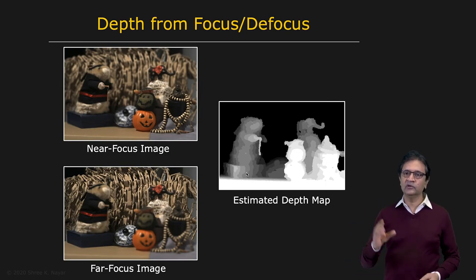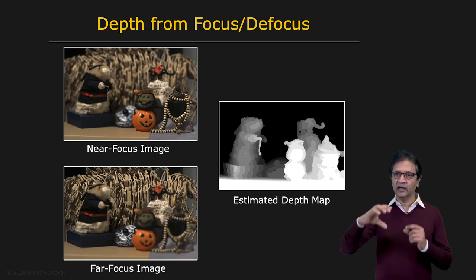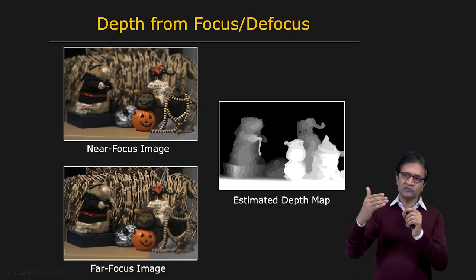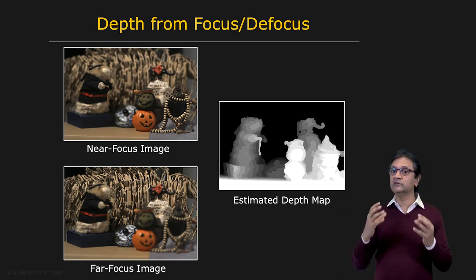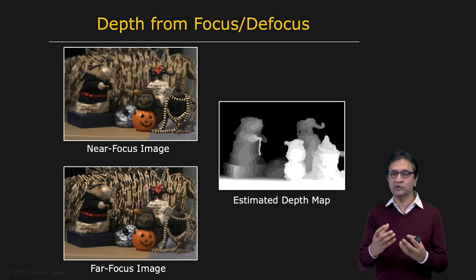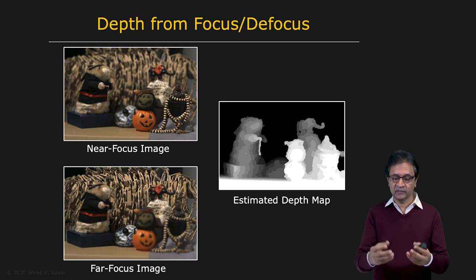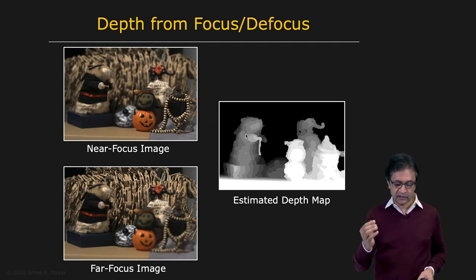When you look through a lens in a large digital SLR camera and change the focus setting, you see that points in the scene come into focus and go out of focus. When exactly a point comes into focus has something to do with the distance of the point from the camera. So we develop algorithms that take a small number of images with different focus settings and recover the three-dimensional structure of the scene. Here you see a near-focused image and a far-focused image, and from just these two images we can compute a detailed depth map where the closer the point is, the brighter it is.